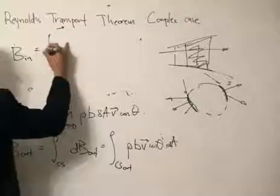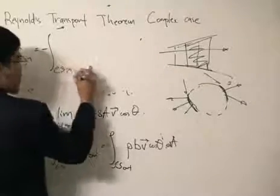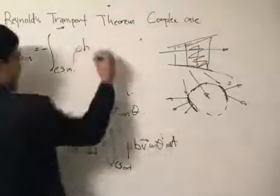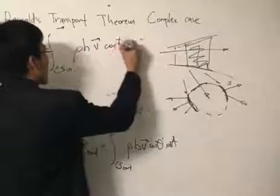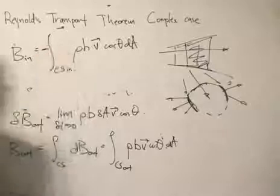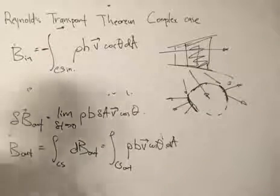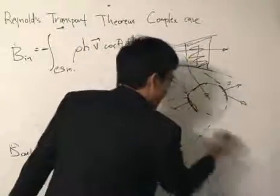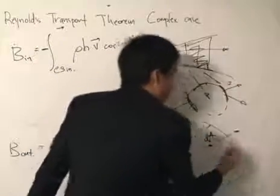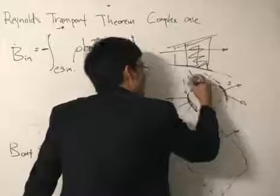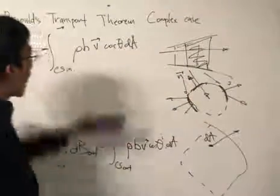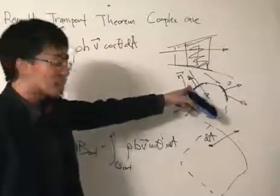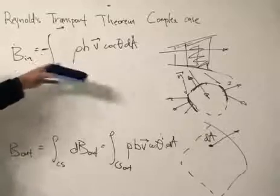Now let's write the inflow term, CS_in. It's going to be the same form — density times the intensive property times V cosine theta dA — however, I introduce a negative sign, and that negative sign is important. Remember how the normal vector is defined: the normal vector is defined as going outward from the control surface. For the influx of the extensive property at the control surface, the flow is in the opposite direction to the normal vector. That is why we need the negative sign.